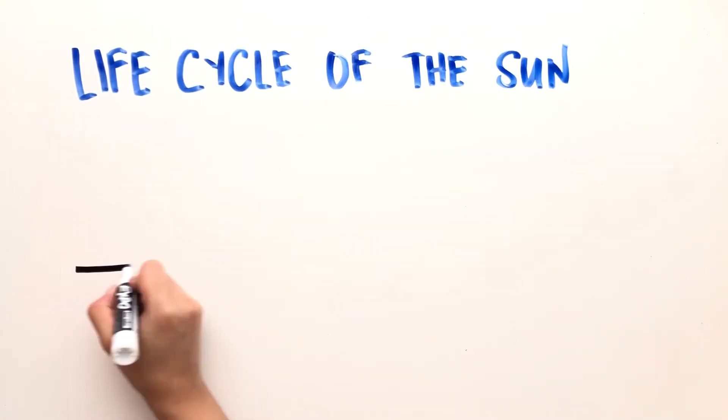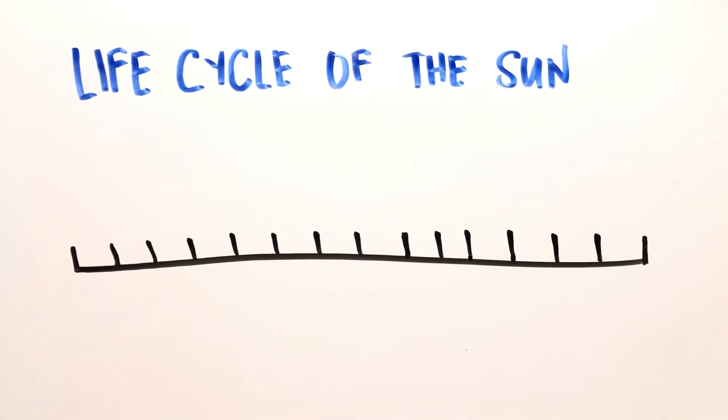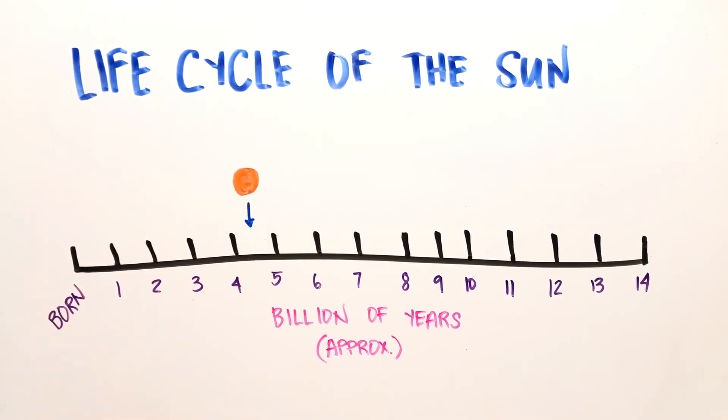But how long will the Sun last? The Sun is a yellow dwarf, and eventually, it will burn out. Yellow dwarfs usually last about 10 billion years, and the Sun is halfway through its lifetime. Near the end of its life, it will swell up large enough to engulf the Earth.